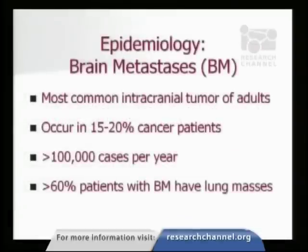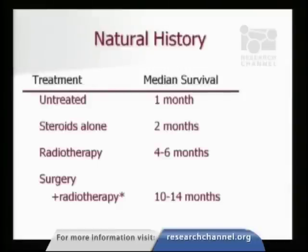Brain metastases are one of the most common intracranial tumors in adults, occurring in up to 15 to 20% of cancer patients — over 100,000 cases per year. Over 60% of these patients might have lung masses as well. If left untreated, most patients succumb fairly quickly. If radiation is delivered, survival can be extended to about four to six months. In select patients who are candidates for surgery or who have only a few tumors, they may live considerably longer. We felt this was a very reasonable application for the CyberKnife technology.